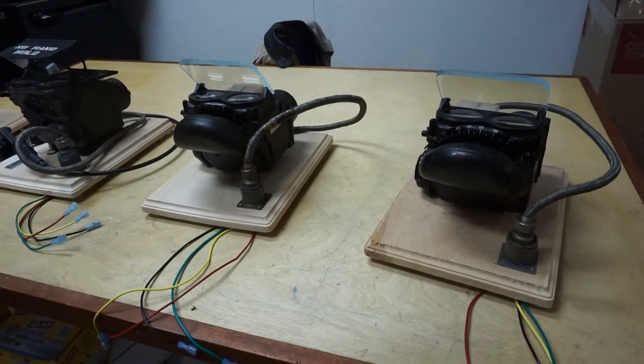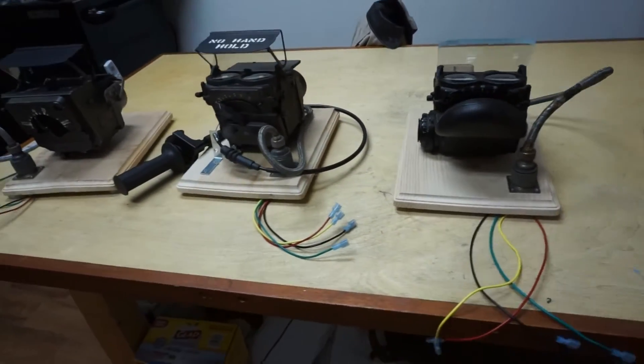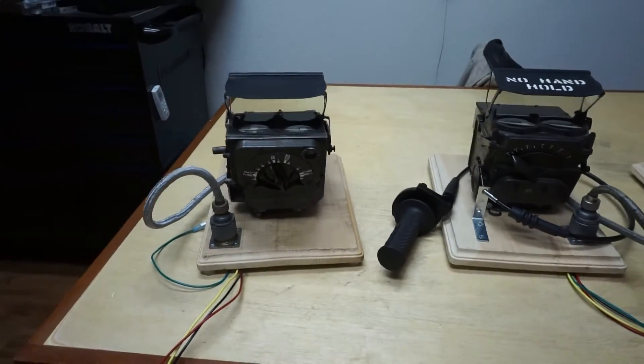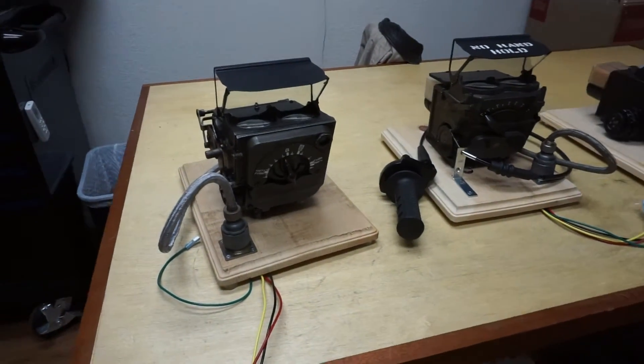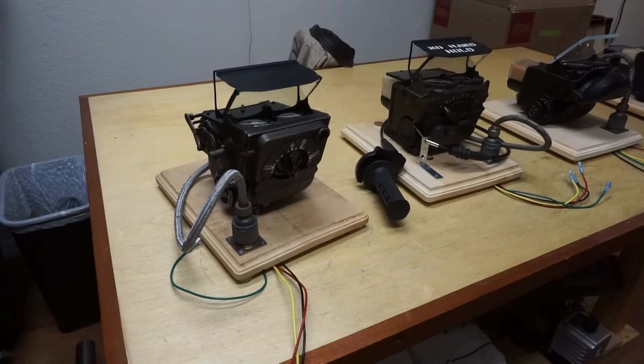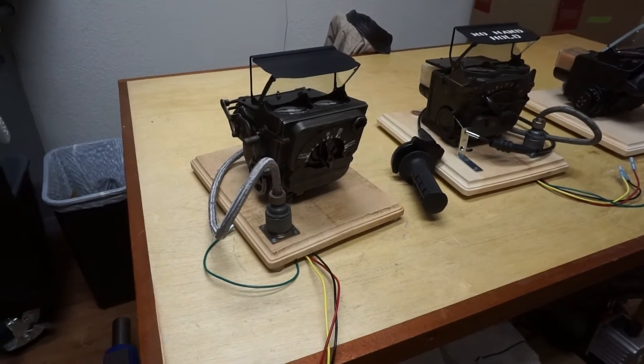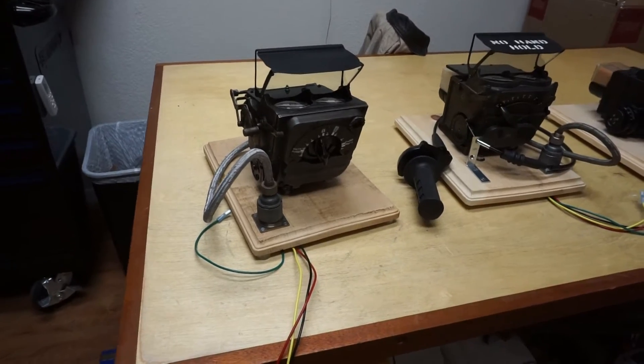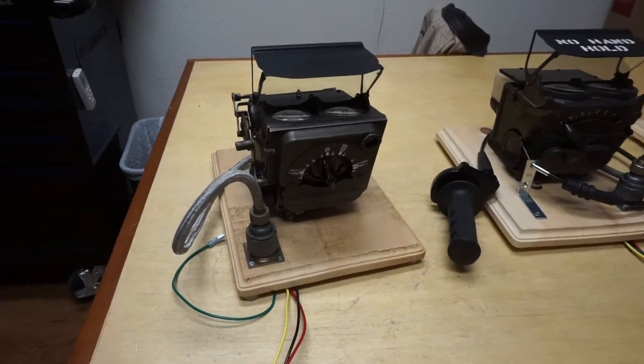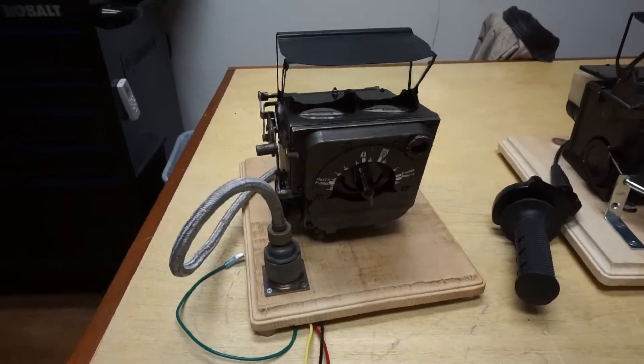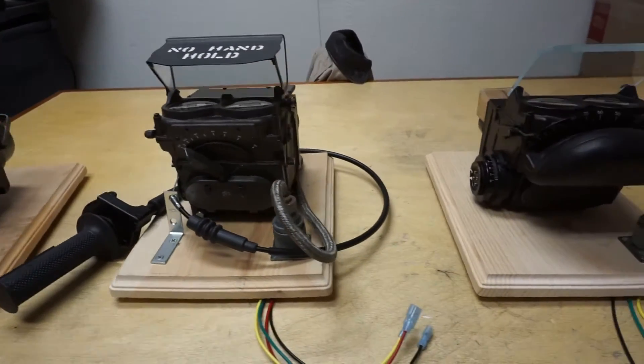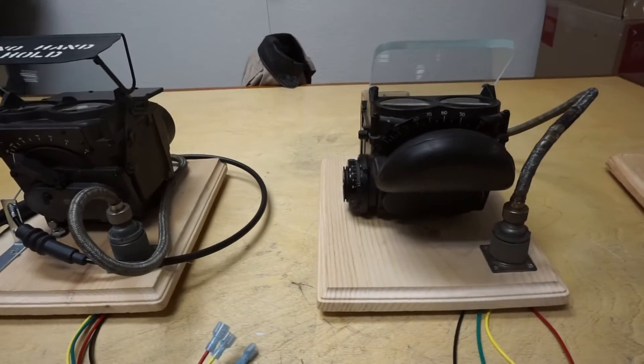I'll introduce you to each of these four gyro gun sights but first a brief history. The concept of using a gyroscope to determine the deflection angle needed to shoot down an enemy aircraft was first seriously introduced by a Scottish scientist named Leslie Bennett Craigie Cunningham who worked for the Royal Aircraft Establishment and developed the Mark 1 gyro gun site.